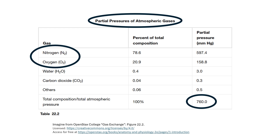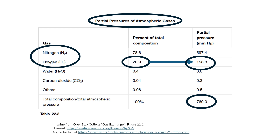We know that what's creating that total air pressure is mostly oxygen and nitrogen gases. We also know that oxygen makes up roughly 21% of all the gas within the atmosphere. This means if we want to figure out oxygen's partial pressure, all we need to do is figure out 21% of 760, which comes out to approximately 160 millimeters of mercury. That is oxygen's partial pressure at sea level.